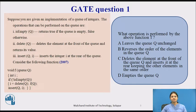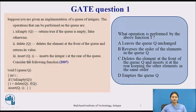The first question we are going to handle is from 2007. Suppose you are given an implementation of a queue of integers. The operations that can be performed on the queue are: is_empty, which returns true if the queue is empty and false otherwise; delete_q, which deletes the element at the front of the queue and returns its value; and insert_q(i), which inserts the integer i at the rear of the queue.